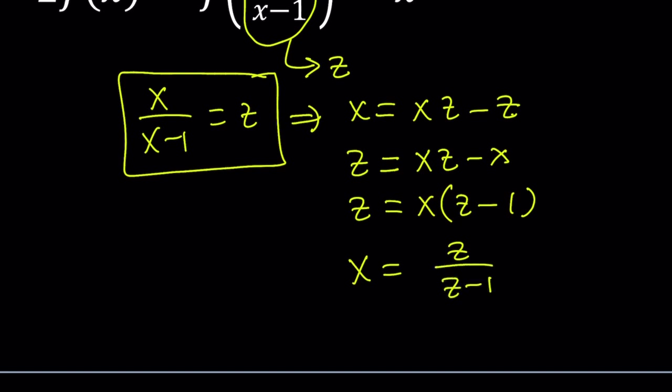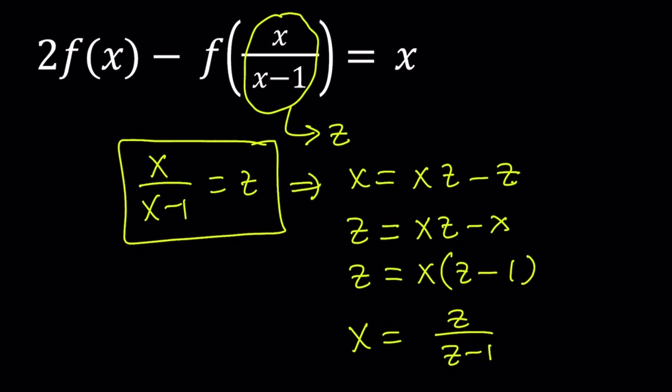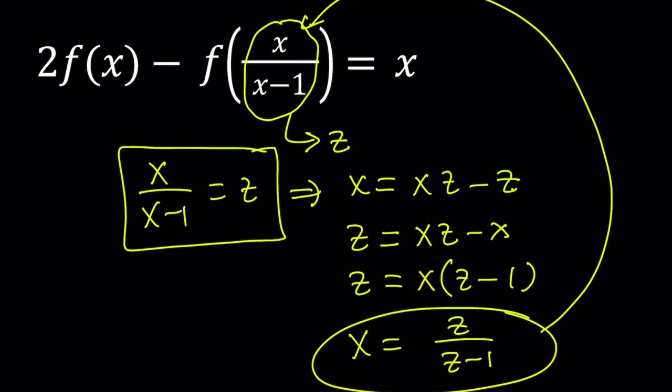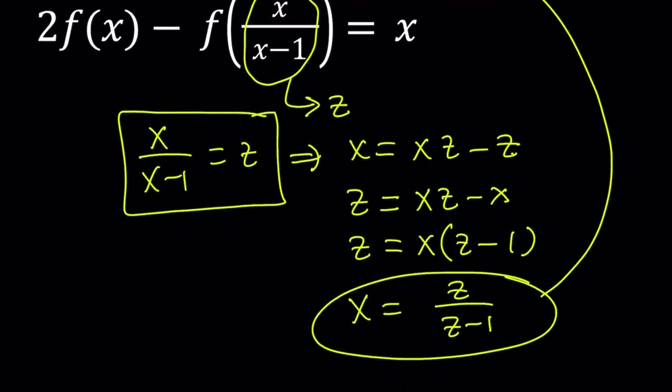Now this is pretty good because that tells me if I replace x with z over z minus 1 here, then this just turns into a z.